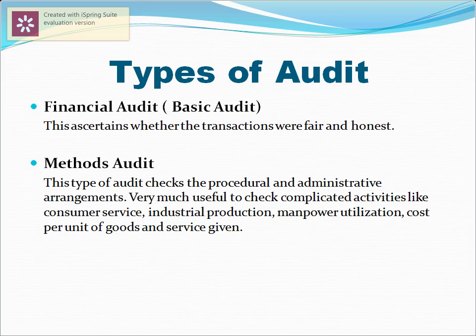Now, we will look at the types of audit. We can see the types given by the International Labour Organization. First is the financial audit, which is also called the basic audit, and second is method audit. In the first type, there is a general examination of transactions and the auditor looks at the truthfulness of the transaction, but it does not examine the transaction thoroughly. The second type is method audit, which examines procedural and administrative arrangements. It is very useful to check complicated activities like consumer service, industrial production, manpower utilization, and other aspects.